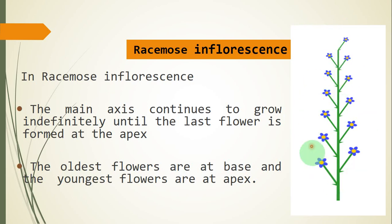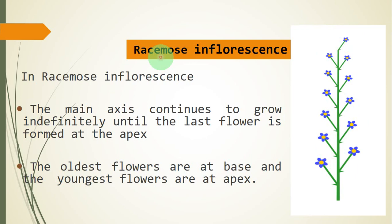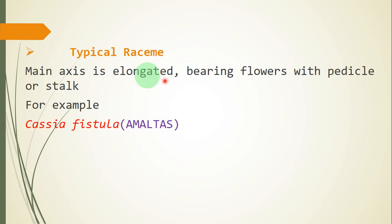Such succession is called acropetal succession. So racimose inflorescences are those in which the main axis continues to grow and produces flowers until the last flower is produced at the apex. The oldest flower is towards the base and the youngest towards the apex, and as flowers keep appearing their size keeps reducing — this is acropetal succession. The first type of racimose is the typical raceme.